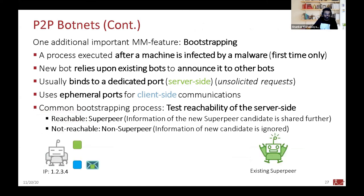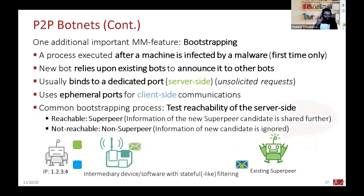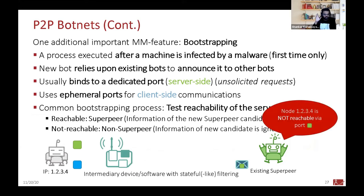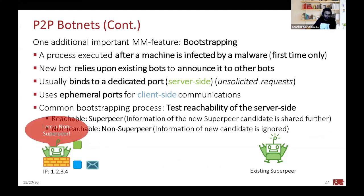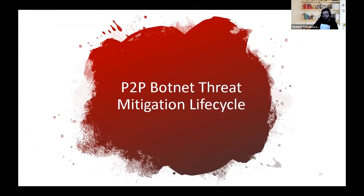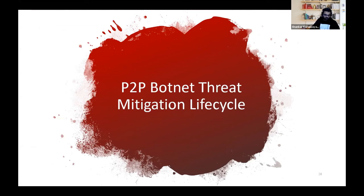For the non-superpeer example: if there is a wireless access point acting as NAT in between, the server port is unreachable. Since the superpeer gets no reply on that port, it concludes node 1.2.3.4 is not reachable via that port and responds saying you are not a superpeer, but you can remain connected. That's how the bootstrapping process takes place in peer-to-peer botnets.